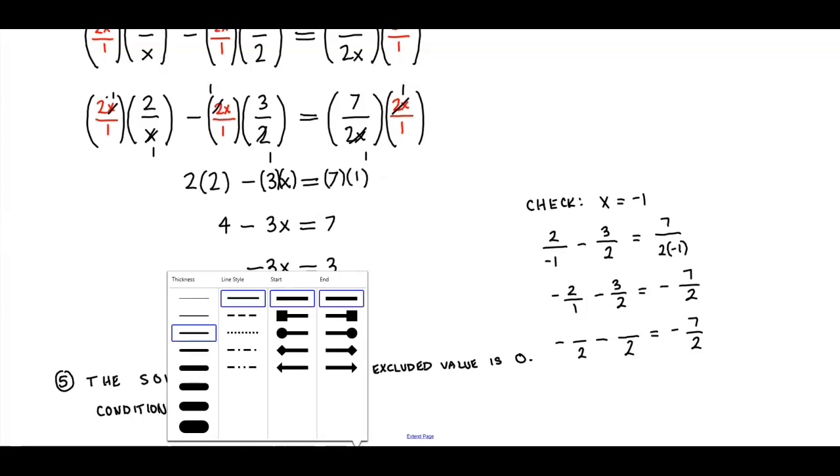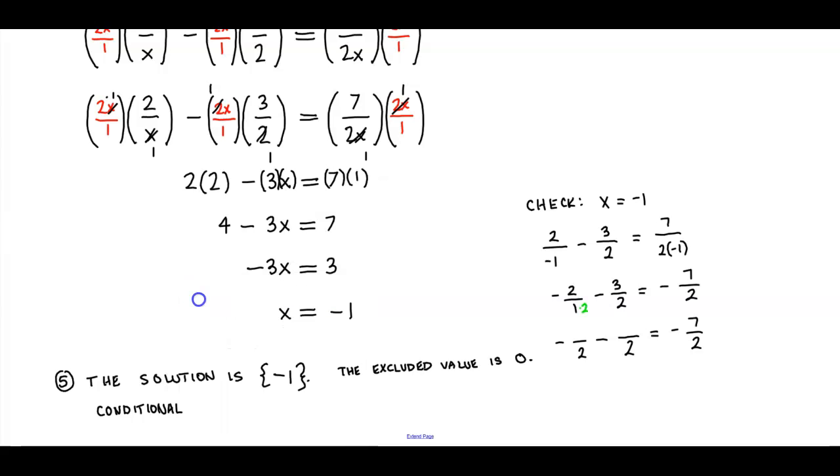I'm going to keep the right side the same. So what do we need to multiply by 1 to get 2? We're going to multiply that by 2. So 2 times 2 is going to give us 4. 2 times what's going to give you 2? 1. So 3 times 1 is going to give you 3. 2 times 1 is going to give you 2. And 7 times 1 is going to give you 7.